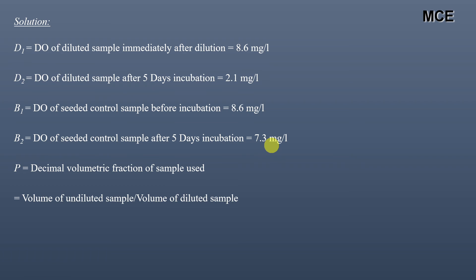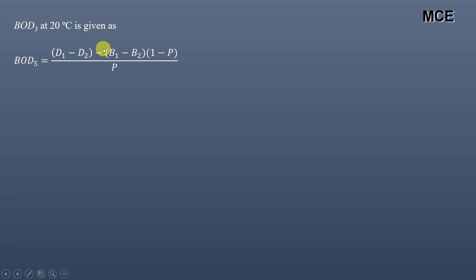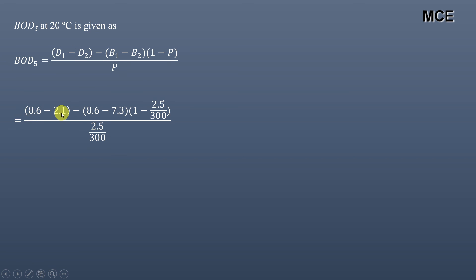P is the volume of undiluted waste water divided by the volume of the diluted sample. The volume of undiluted waste water is 2.5 mL and the volume of the diluted sample is 300 mL. Putting these values into the formula: BOD5 = (8.6 - 2.1) - (8.6 - 7.3) × (1 - 2.5/300) / (2.5/300), which equals 625.3 mg/L.